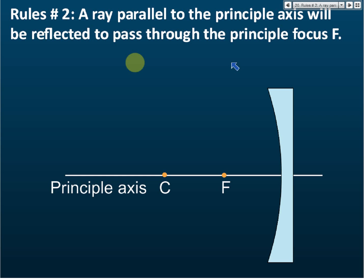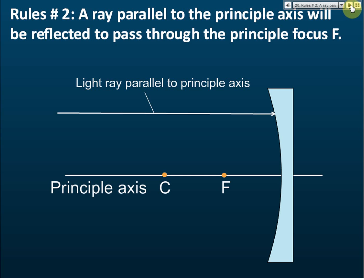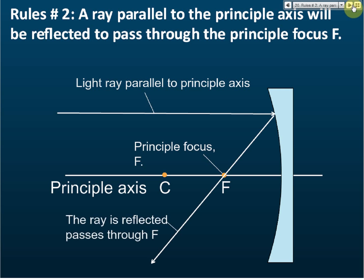Rule number two: a ray parallel to the principal axis will be reflected to pass through the principal focus. So if this ray is parallel to the principal axis, it will be reflected and pass through the principal focus F.